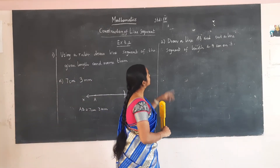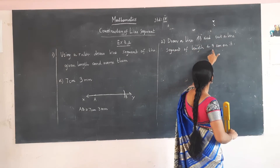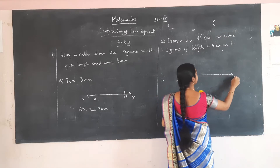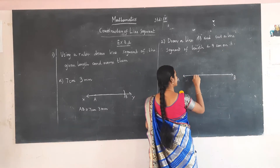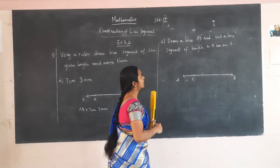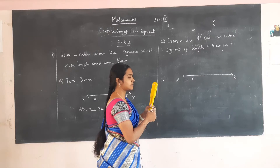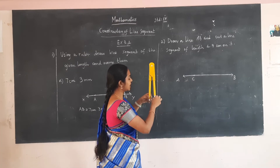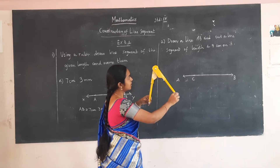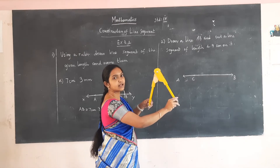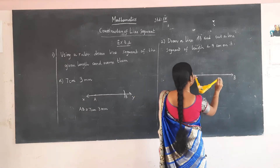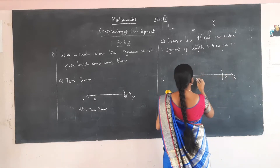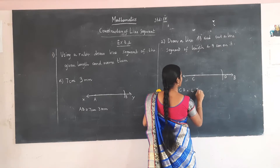We have to draw a line AB and cut a line segment of length 4.3 cm on it. I have drawn line AB. Now we have to fix a point — let this point be C. Take the scale and compass; the sharp edge should be on 0, and move to the right until we reach 4.3 cm, that is 4 cm and 3 mm. Without changing the compass, keep it on C and draw an arc. Now we have point D. CD will be 4.3 cm.